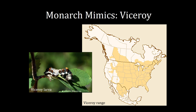Viceroys are also much smaller than monarchs — their wingspan is typically less than three inches, while a monarch's wingspan is at least three and a half inches. You don't need to worry about confusing viceroy larvae with monarch larvae. Viceroy larvae have a different mimicking strategy — they mimic bird poop. Viceroys are widespread, so you may encounter them on surveys across most of North America. They live in moist, shrubby areas like marshes and swamps.